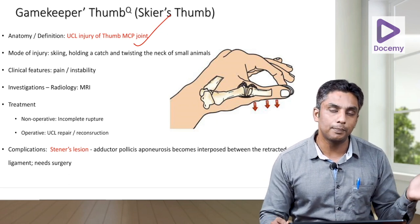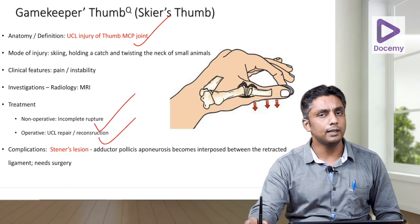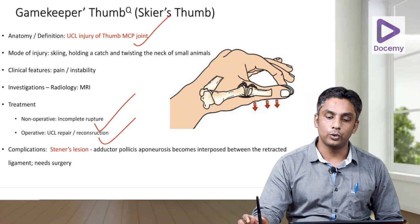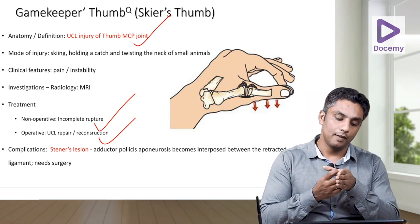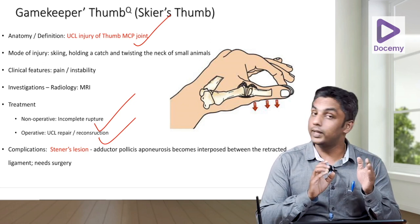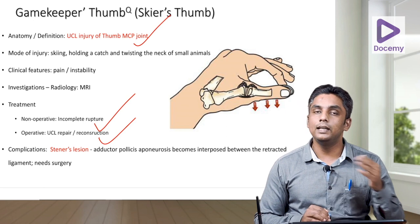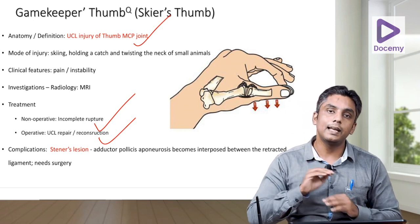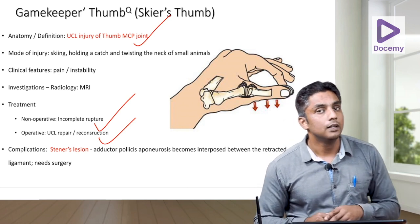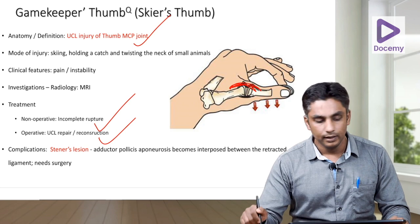An important complication terminology is Stener's lesion: the adductor pollicis aponeurosis comes to lie between the torn UCL and the bone, preventing the ulnar collateral ligament from healing over the base of the thumb — this is an absolute indication for surgery. So Stener's lesion is another key term in gamekeeper's thumb, where the UCL gets ruptured.